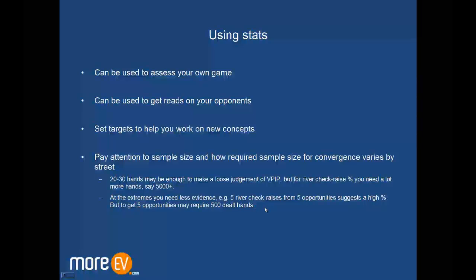Obviously at the extremes though, you need less evidence. So for example, if someone's check raised 5 times out of 5, they might have only needed 500 hands to get that 5, and you could probably say that if they've done it 5 times out of 5, they'd like to check raise on the river - even though you wouldn't be doing so with absolute certainty. You could make some approximation to say this person likes to check raise a lot, but you wouldn't be able to distinguish between someone who check raises 10% and 25% based on only 5 opportunities.